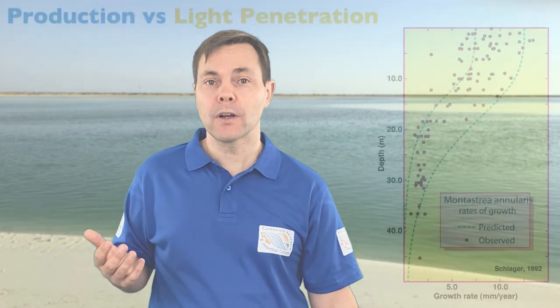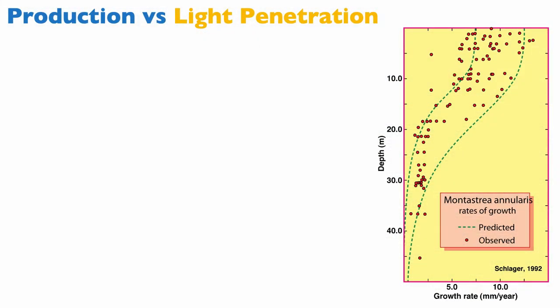To bring this point home, here I'm showing you some actual data from the Bahamas looking at one type of coral, Montastrea annularis. We have predicted growth of this particular coral in green dashed line, that's the theoretical model, and then we have observed growth rates. The growth rates are in millimeters per year and the vertical axis is depth below sea surface. You can see that the maximum production of that coral in the Bahamas happens in the first 10 meters of the water column.